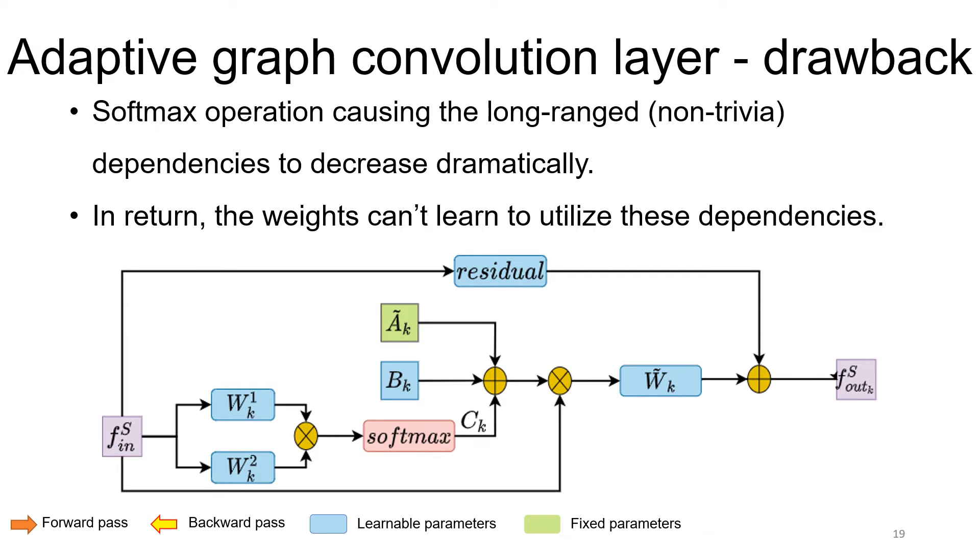The input data is entering the self-attention model that produces the sample's unique matrix. The softmax operation normalizes the matrix, resulting the long-range dependencies, which tend to be weaker, to decrease them dramatically.